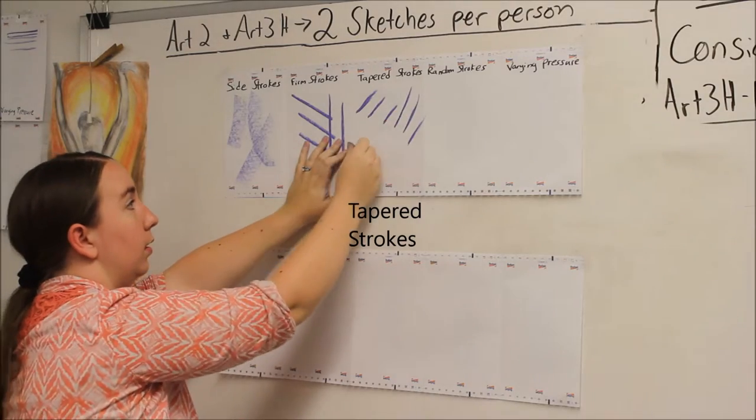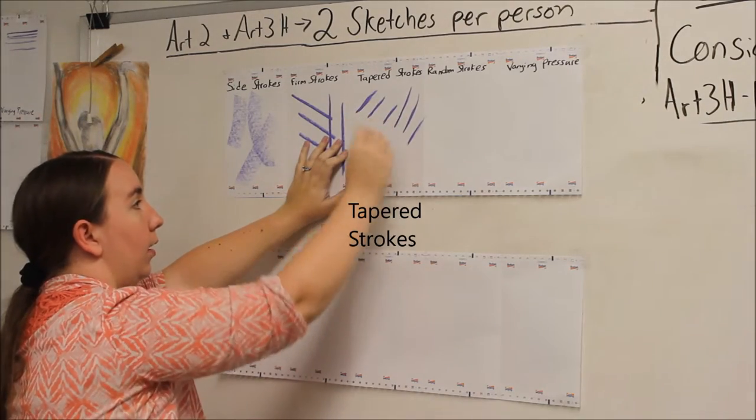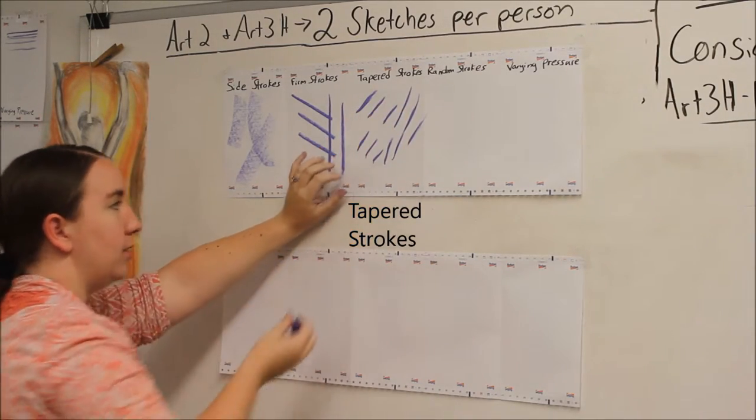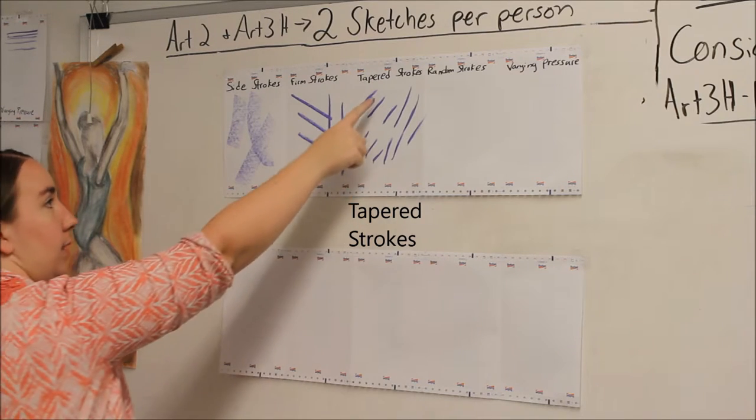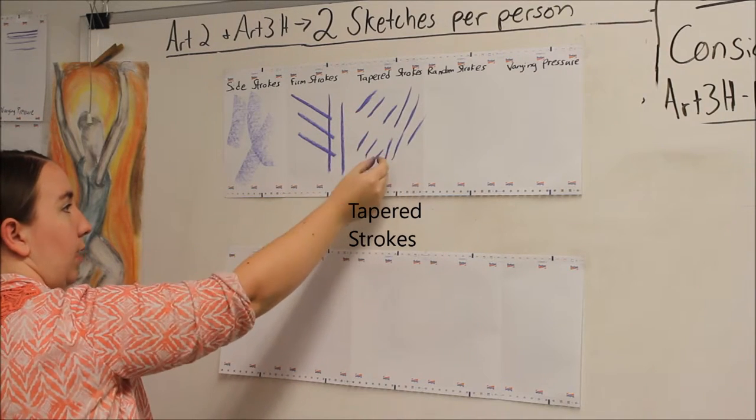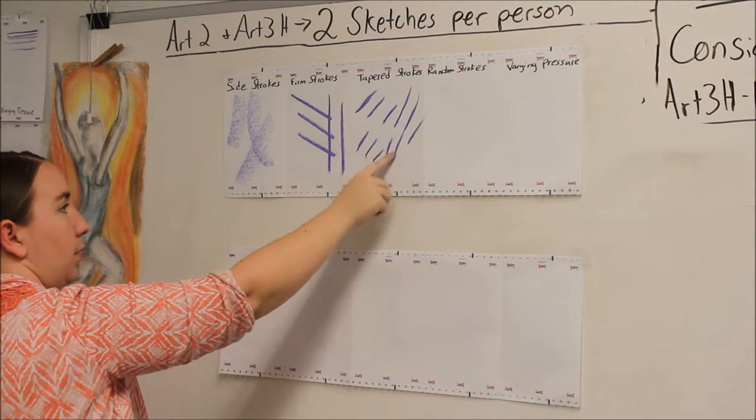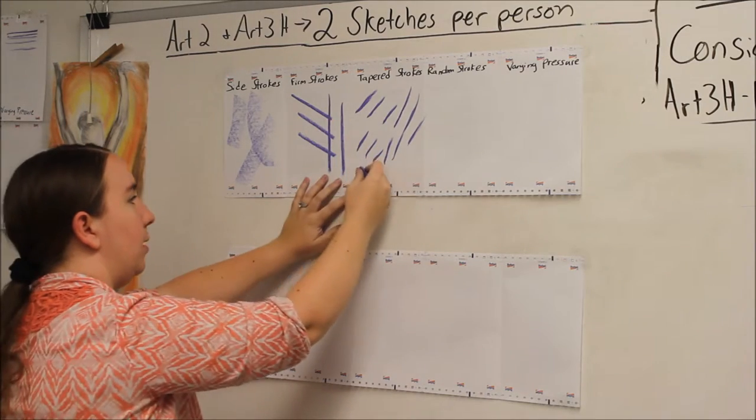This one's actually really good. I kind of joked with my other classes saying swish and flick. If you find that the end of your stroke is kind of the same thickness as the rest of them, keep trying to make that tapered end.